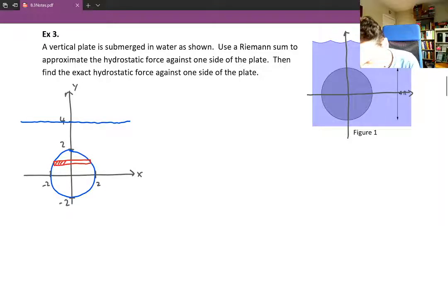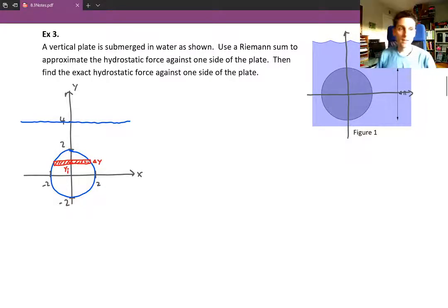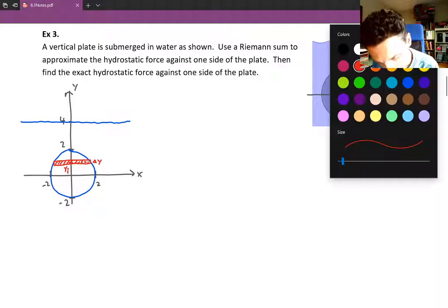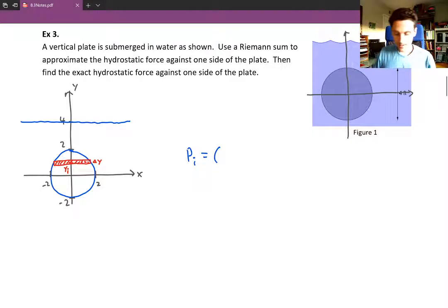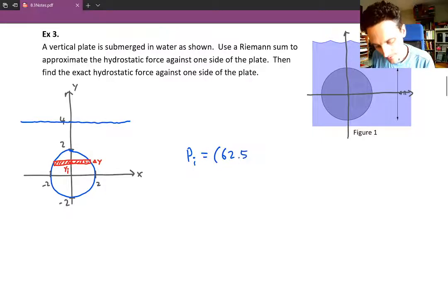So we would break our regions into horizontal strips always for these problems because that horizontal strip represents a constant depth. So I'm just going to draw a sample horizontal strip at a given y value. We'll call it y sub i again, with a thickness of delta y. And our goal then is going to be to find the pressure acting on just that strip. So we'll call that p sub i.